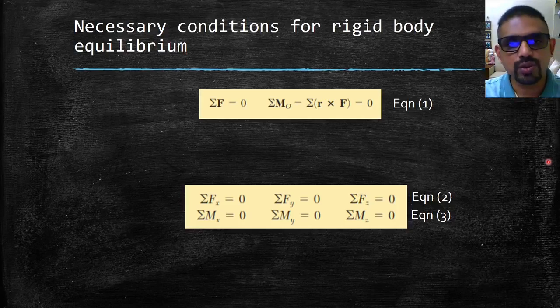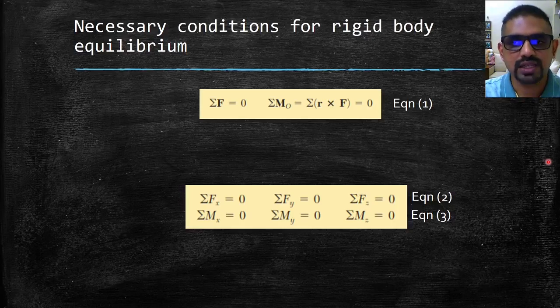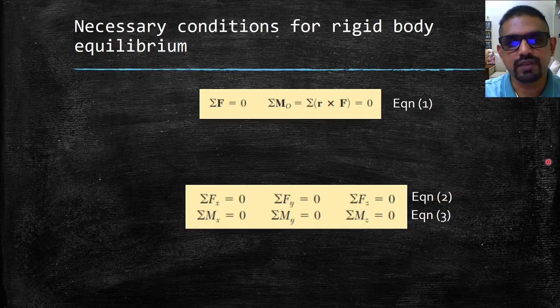In order to write the equation of equilibrium for a rigid body, it is essential to first identify all the forces acting on that body and then draw the corresponding free body diagram.